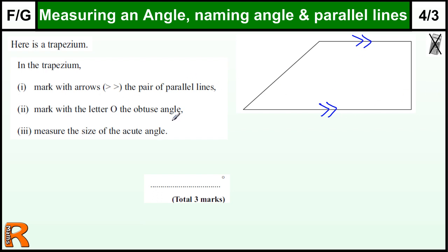Mark on with the letter O the obtuse angle. The obtuse angle is the one that's between 90 and 180, not 90 or 180, so not these two, but between them. So it's this angle here. This is the angle O, the obtuse angle.